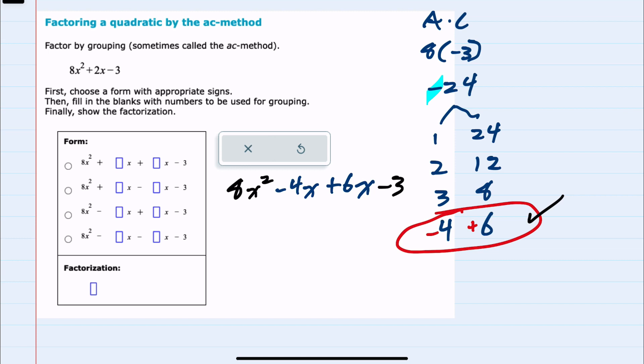So what we've done here is we've replaced this middle term with these two values, which still would simplify back to being just a 2x, but now that we have four terms, we can factor by grouping.